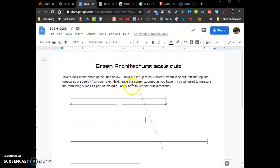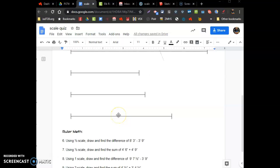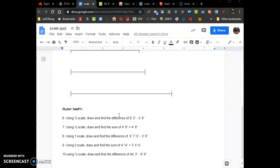All right, here's how to take the quiz directions. There's a photo of six lines. There's one, there's two, there's three, four, five, and six. And there's some ruler math.